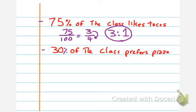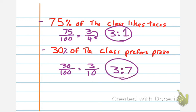Now, if I do the same thing with the class that prefers pizza, if I take 30% over 100, I end up getting 3 tenths when that reduces down. So 3 is my part. What and 3 makes 10? So 3 to 7. So the kids like pizza at a ratio of 3 to 7.